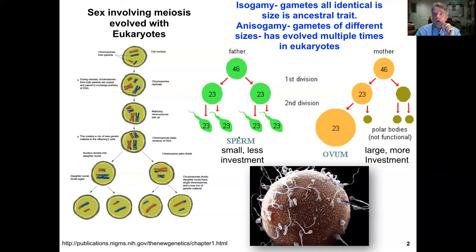Most eukaryotes involve haploid gametes that fuse to form a zygote — that is sexual reproduction. When we talked about plants and fungi, we looked at the haploid versus diploid stages in early diverging nonvascular land plants, whereas in animal systems the longest life stage is diploid, and the only haploid stage is the sex cells themselves.